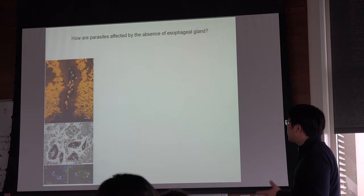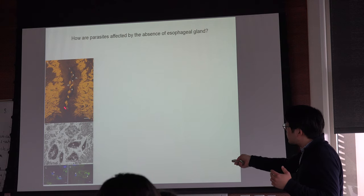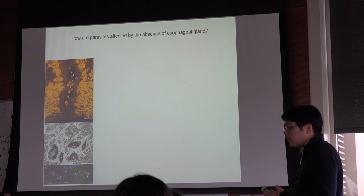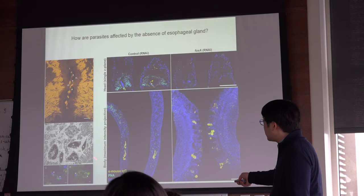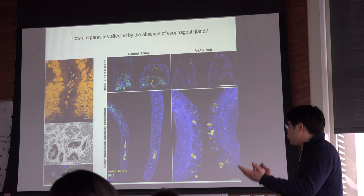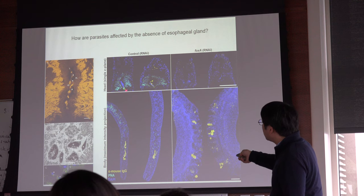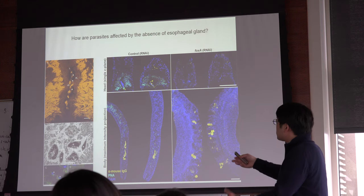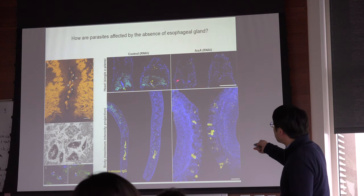How are these parasites affected by the absence of the gland? Earlier I mentioned that there were mononuclear leukocytes detected in the esophageal lumen, and EM shows different kinds of immune cells that can be observed there. One approach was to test using mouse IgG labeling — labeling all IgG components from the mouse to see where IgG is in the worm. In the control RNAi, you can see some sort of IgG-positive cells or antibodies in the esophageal gland region. But in the FOXA RNAi parasites you're missing the gland and also missing that IgG signal.